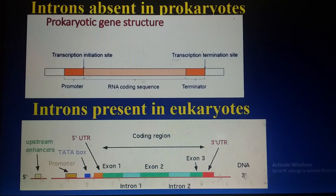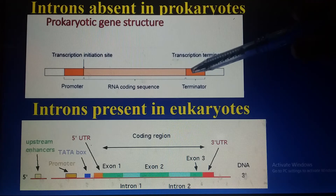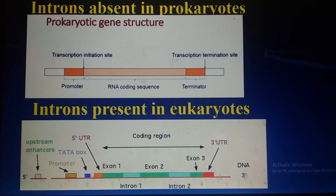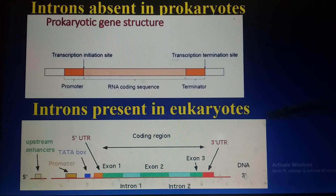Introns are absent in prokaryotes but present in eukaryotes and viruses. Here you can see two figures — the first is related to prokaryotic gene structure and the second to eukaryotes. In the prokaryotic case there is no intron, just exons are present, because prokaryotes contain just one single chromosome and the complete genome is exon type. In eukaryotic cells both exons and introns are present — this is the big difference between prokaryotes and eukaryotes.